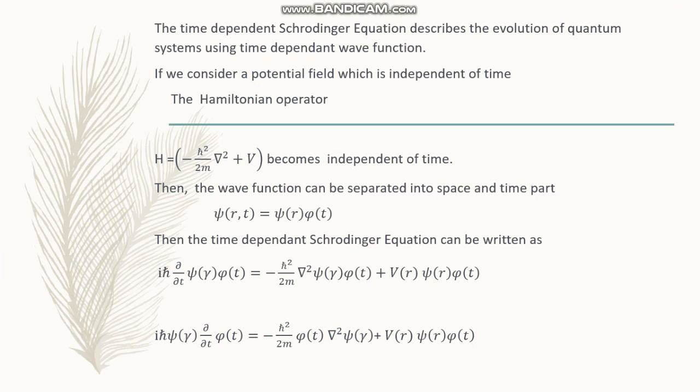In that situation, the time-dependent wave function can be separated into a space part and a time part. We can generate a new equation from this separation, and that equation is ultimately termed as the time-independent Schrödinger equation.